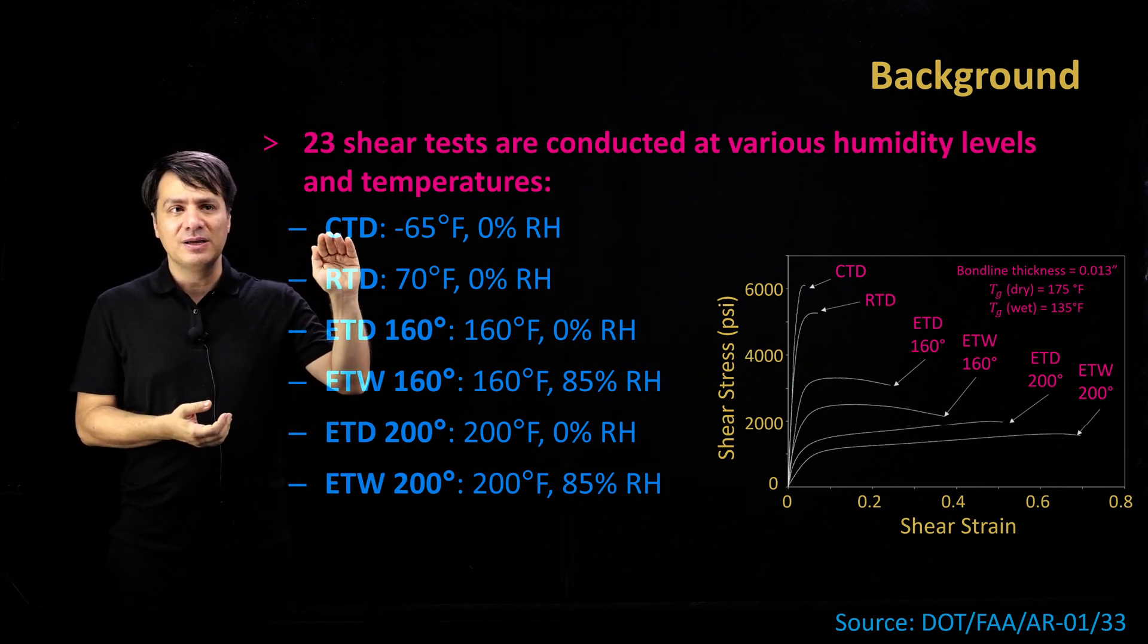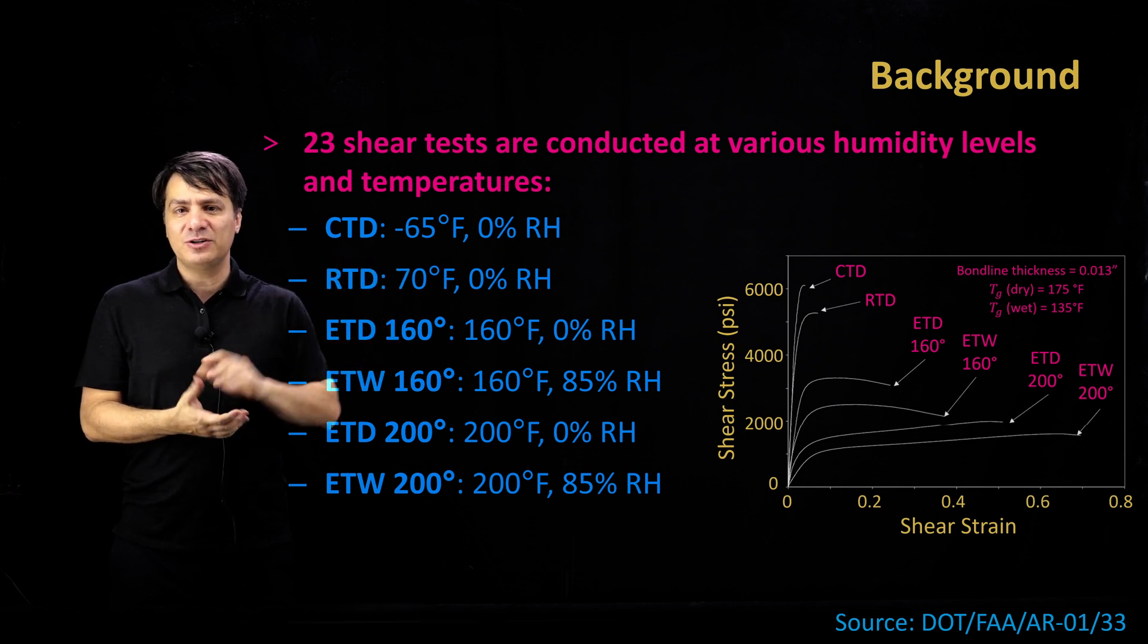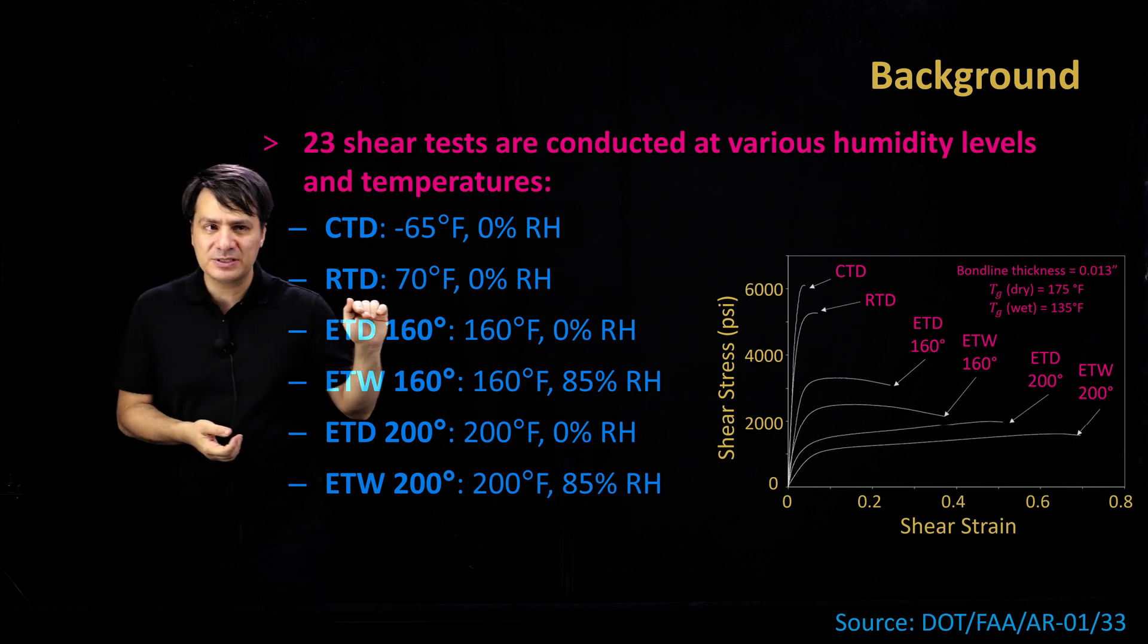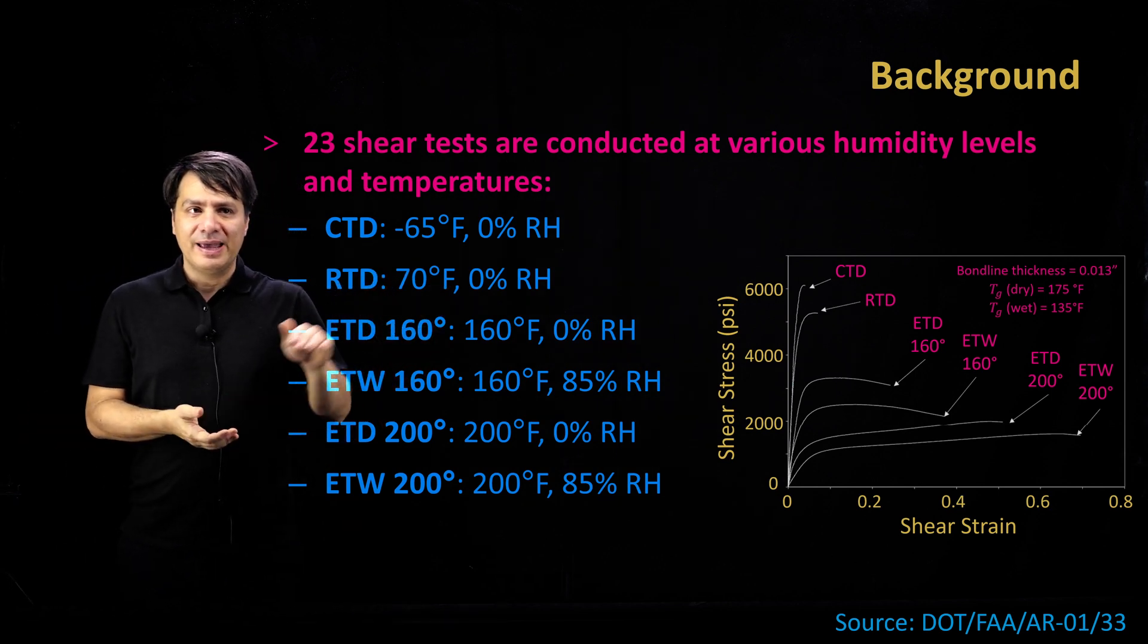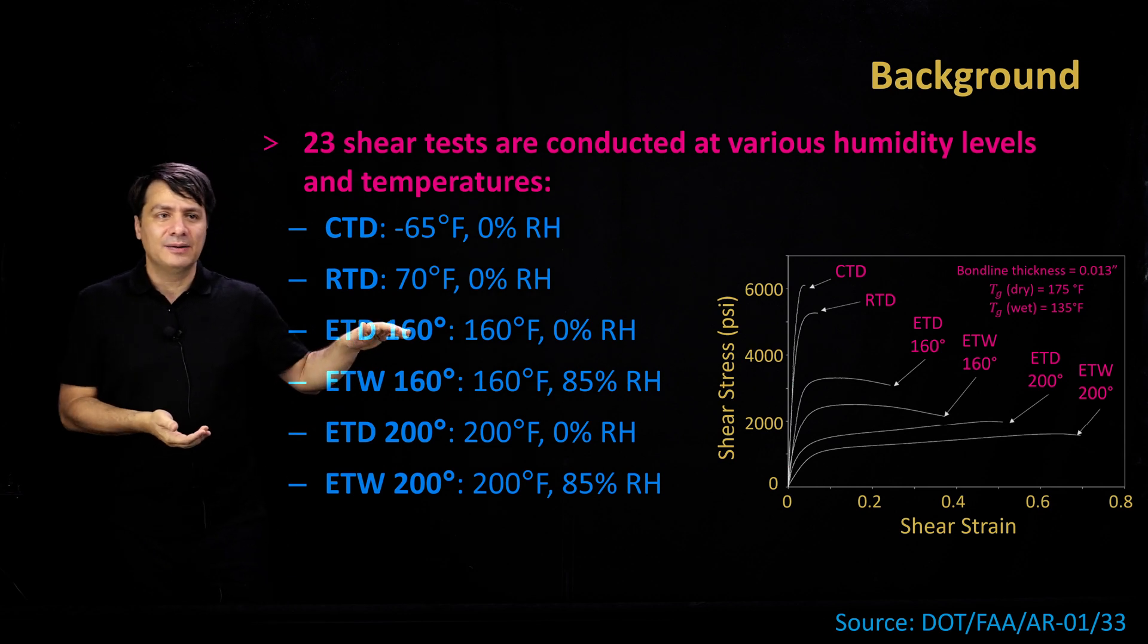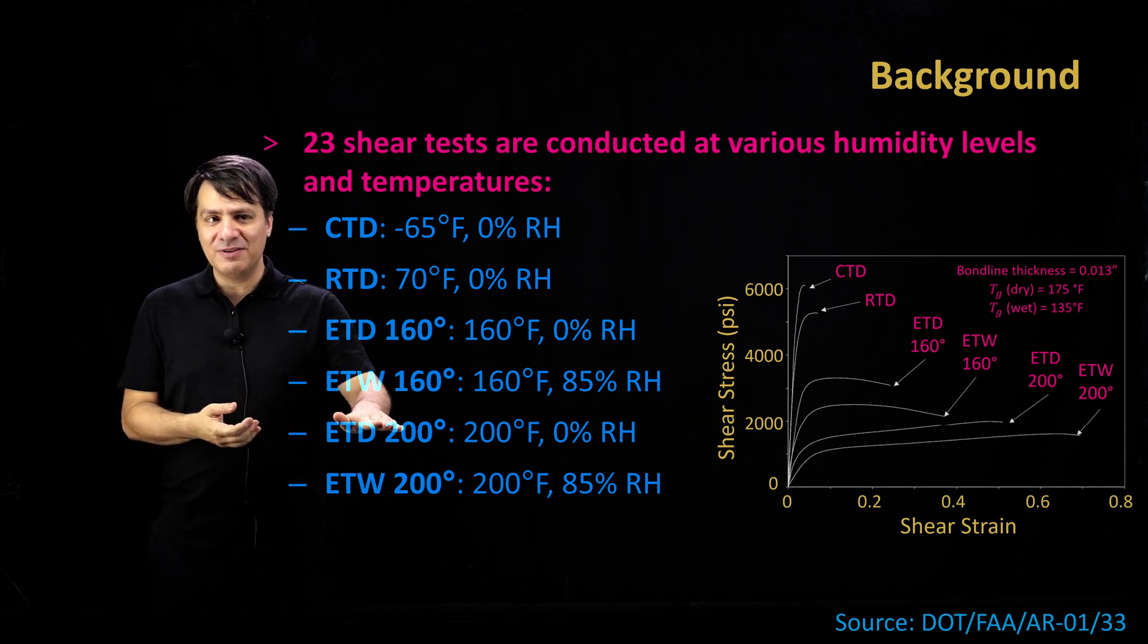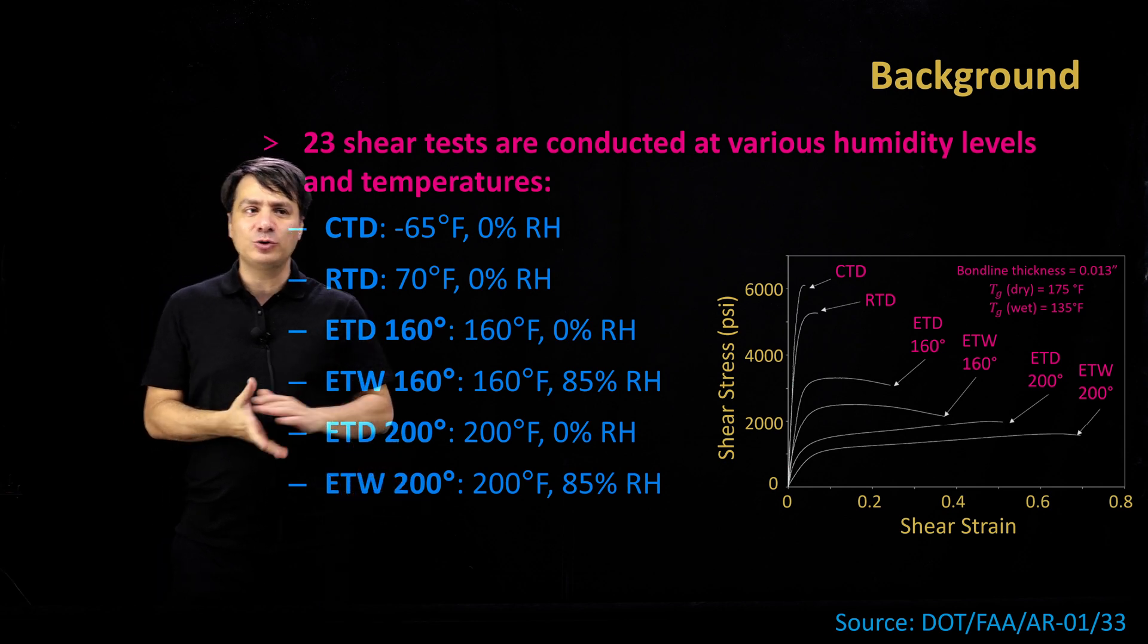So what are these conditions? Cold temperature dry: minus 65°F, 0% relative humidity. Room temperature dry: 70°F and 0% humidity. Elevated temperature dry: 160°F, 0% relative humidity. Elevated temperature wet at 160°F and 85% relative humidity. And then we are repeating elevated temperature dry and elevated temperature wet at 200°F.